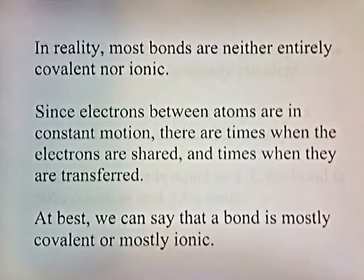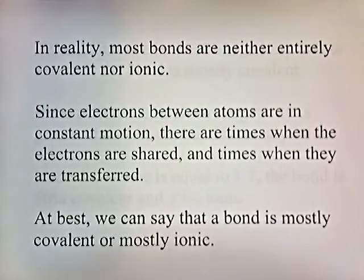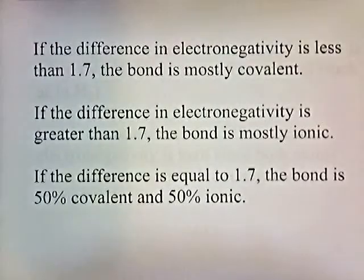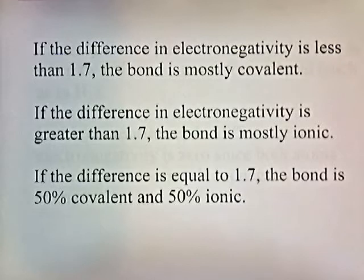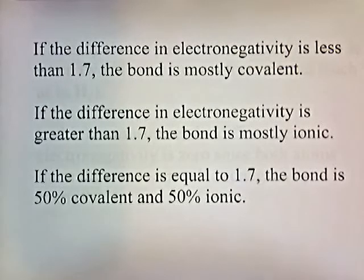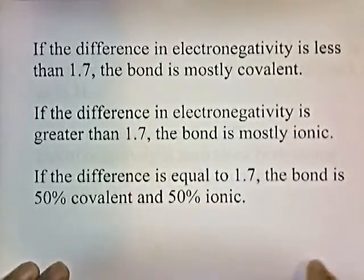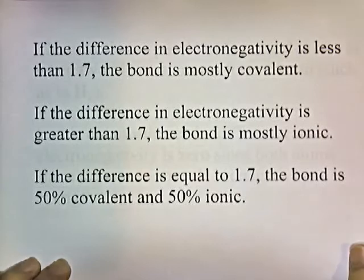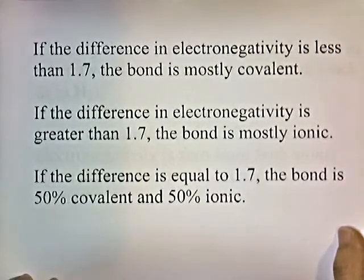In reality, most bonds are neither entirely covalent nor ionic. Since electrons between atoms are in constant motion, there are times when electrons are shared and times when they're transferred. At best, we can say a bond is mostly covalent or mostly ionic. If the difference in electronegativity is less than 1.7, the bond is mostly covalent. If the difference is greater than 1.7, the bond is mostly ionic. If the difference equals 1.7, the bond is 50% covalent and 50% ionic.